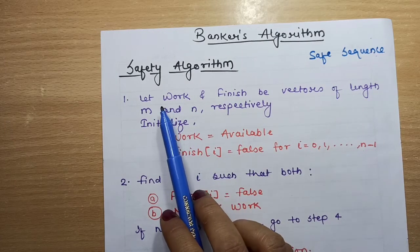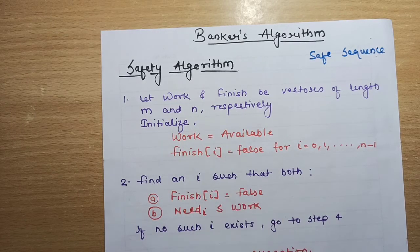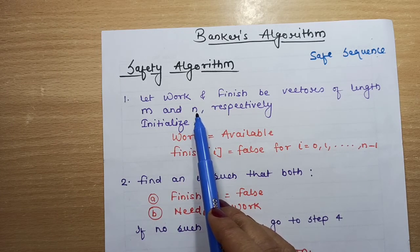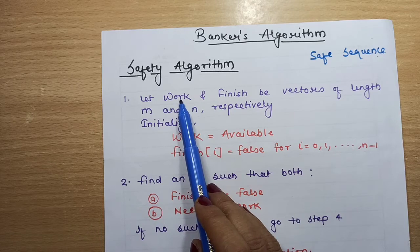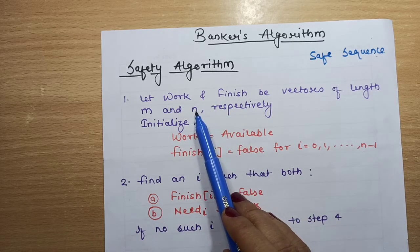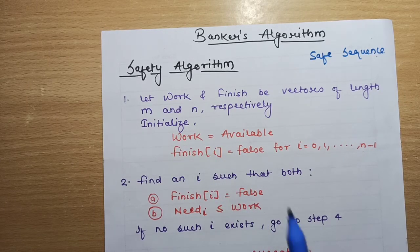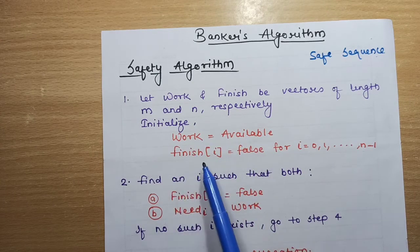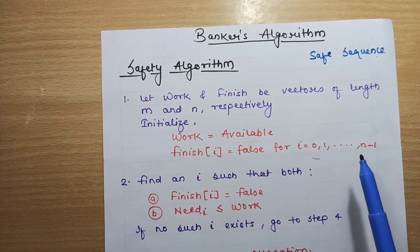The safety algorithm uses two vectors: 'Work' and 'Finish', of length M and N respectively, where M is the number of resources and N is the number of processes. We initialize Work equal to Available, and Finish[i] is set to false for all processes from 0 to N-1, meaning we assume that no process has finished yet.